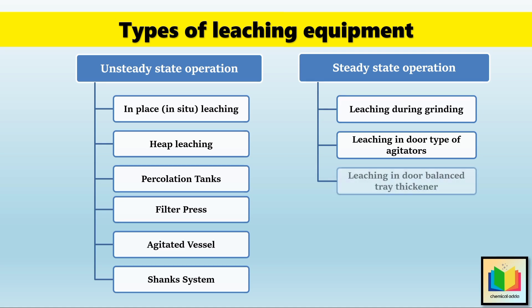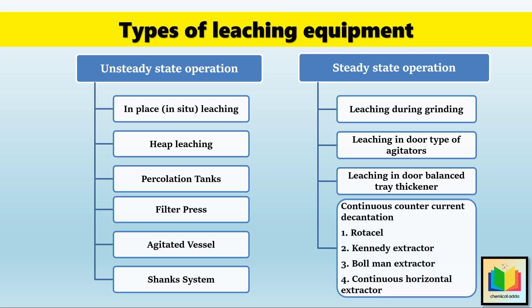The next type is leaching in a dorr balance tray thickener, where multiple layers of trays are used and solvent flows through them, helping to extract the solute gradually. Next is continuous counter-current decantation, where multiple tanks are arranged so that fresh solvent moves opposite to the solid flow for better extraction. Then leaching of vegetable seeds uses special equipment. The rotasol is a rotating drum that extracts oil continuously. The Kennedy extractor is a moving belt type extractor. The Bollman extractor is a bucket type extractor used for large-scale oil extraction. The last is a continuous horizontal extractor, which is a conveyor type system for continuous leaching of seeds like soybeans.